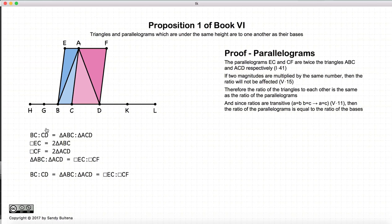So let's rewrite this all again. We have the ratio of BC to CD is equal to the triangle ABC to the triangle ACD. I've just rewritten it. But here we have the ratio of the two triangles is also equal to the ratio of the parallelograms.